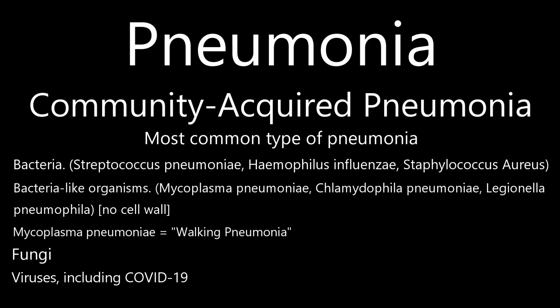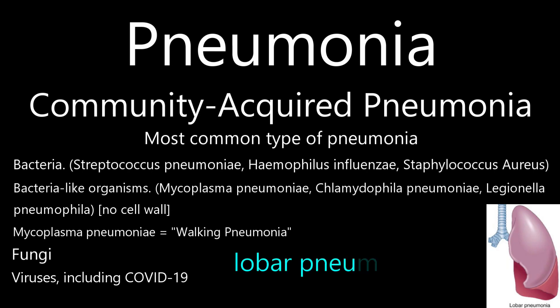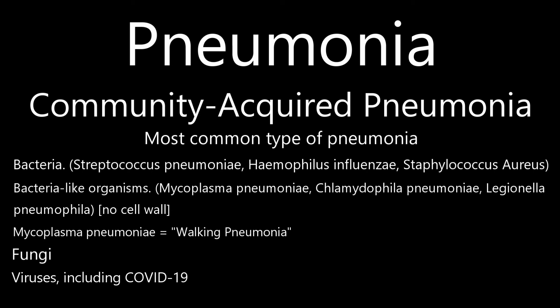The most common cause of bacterial pneumonia in the United States is Streptococcus pneumoniae. This type of pneumonia occurs on its own or after you've had a cold or flu, and it may affect one part of the lung — a condition called lobar pneumonia. Mycoplasma pneumoniae can also cause pneumonia, typically producing milder symptoms than other types. It's often called walking pneumonia, an informal name for pneumonia that typically isn't severe enough to require bed rest.